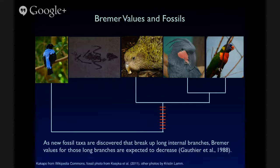And finally, I'd like to point out that a lot of paleontologists think of Bremmer values almost as a measure of missing record. And this is because logically, as new fossil taxa are added, they have to attach somewhere to the phylogeny. And as they break up internal branches, characters that are supporting a clade that's on that branch that's being broken up are going to shift either upward or downward.